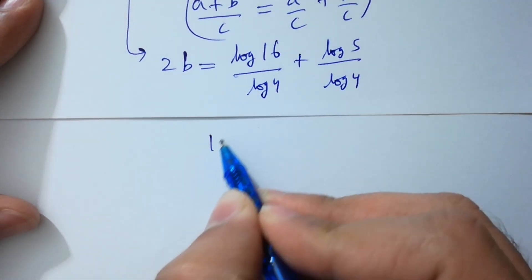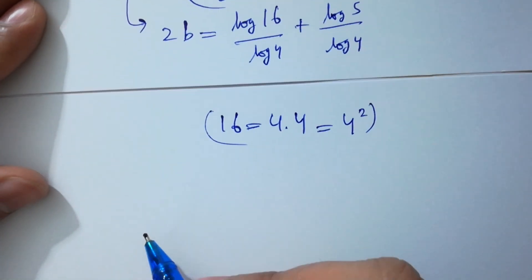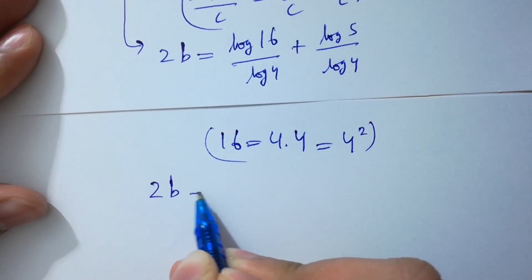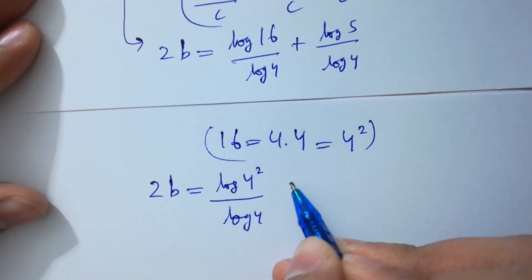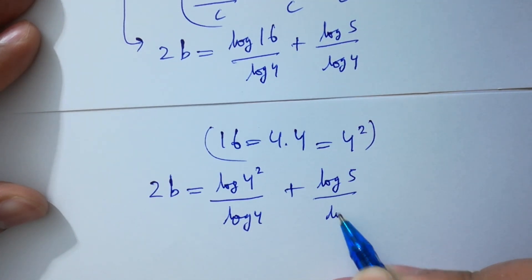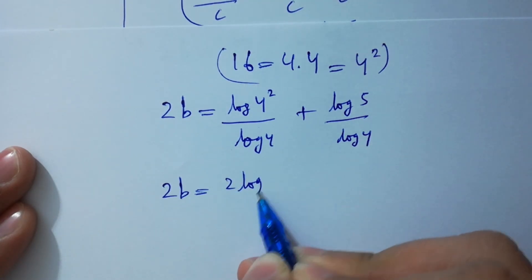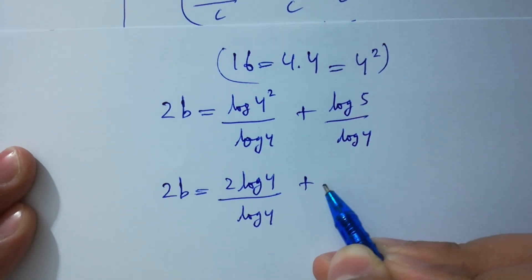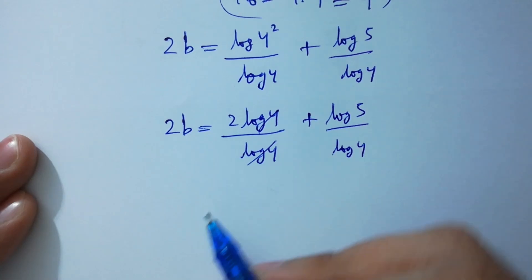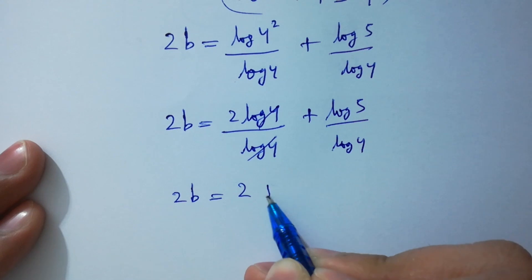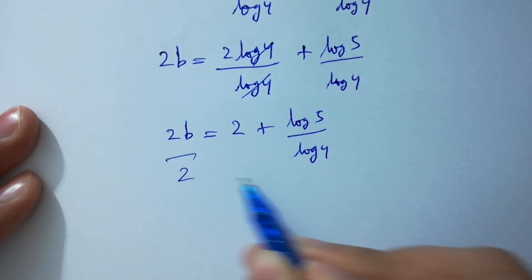Since 16 equals 4 times 4, which is the same as 4 squared, we have 2B equals log 4 squared over log 4 plus log 5 over log 4. So 2B equals 2 log 4 over log 4 plus log 5 over log 4. Log 4 and log 4 will be cancelled. So 2B equals 2 plus log 5 over log 4. Divide by 2 on both sides.